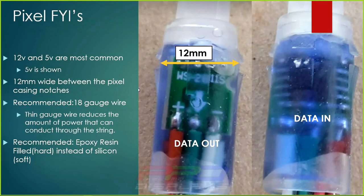Here are some FYIs about bullet node pixels. The first thing to know is that the most common types are 12-volt and 5-volt. A 5-volt pixel has far fewer components than a 12-volt pixel, due to the power used to run those pixels. In most instances, pixels are 12 millimeters wide — that's the distance between the two dimples on the sides of the pixel shown with yellow arrows.